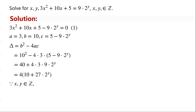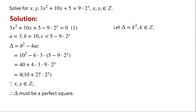Because x and y are integers, the discriminant delta must be a perfect square. We let delta equal k squared, where k is an integer. So 4 times (10 plus 27 times 2 to the power of y) equals k squared.